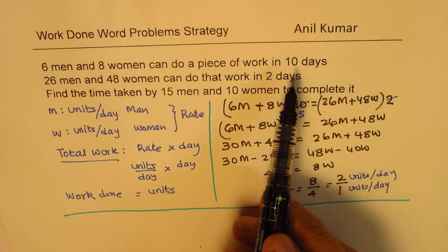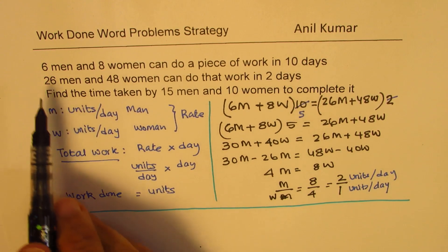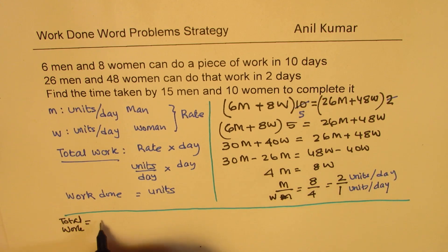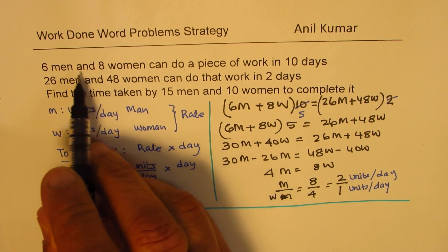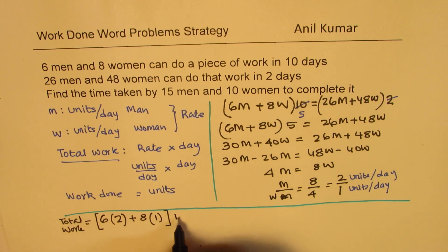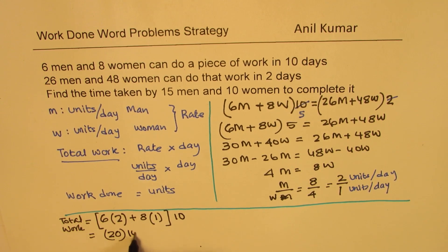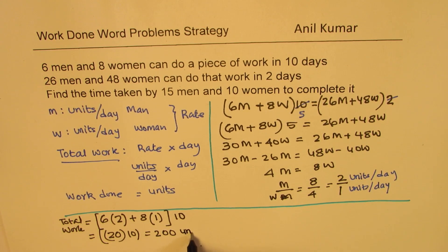Now we can define the total amount of work. Total work: take six men, and for each man it is two units per day, so six times two units per day. Plus eight women, eight times one unit per day. They work for 10 days, so we multiply by 10. That gives you 12 plus 8, which is 20, times 10, which equals 200. So we have 200 units of work.